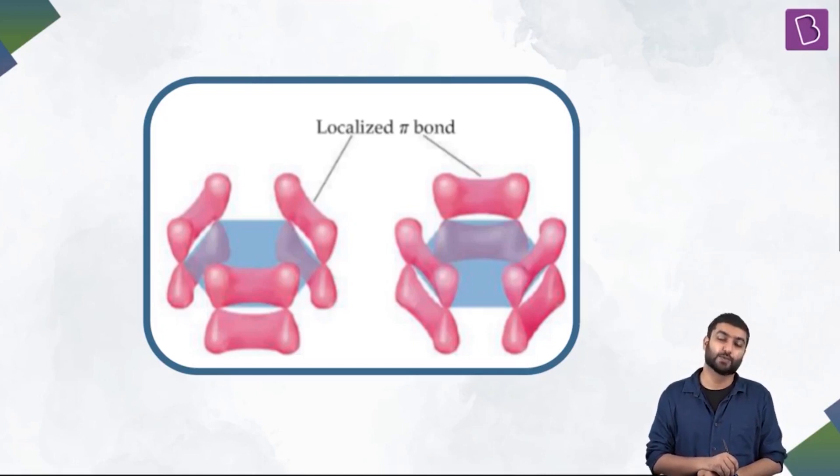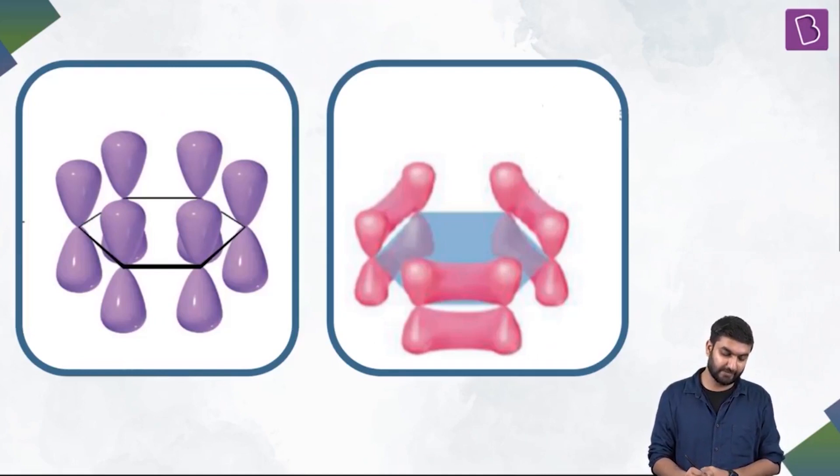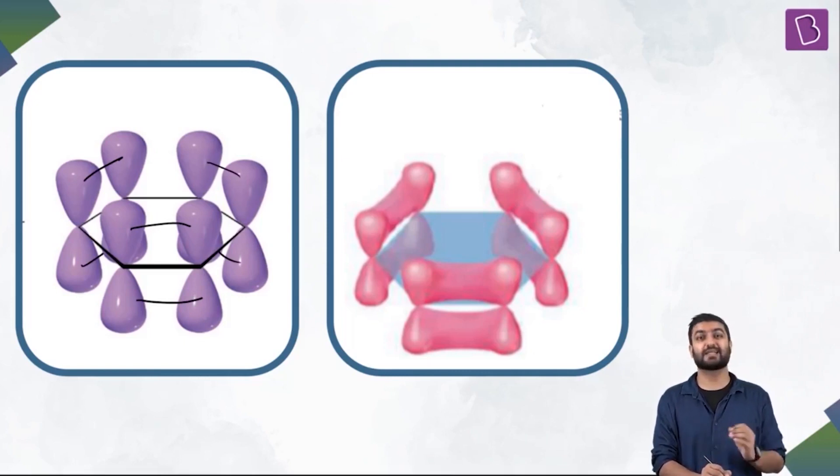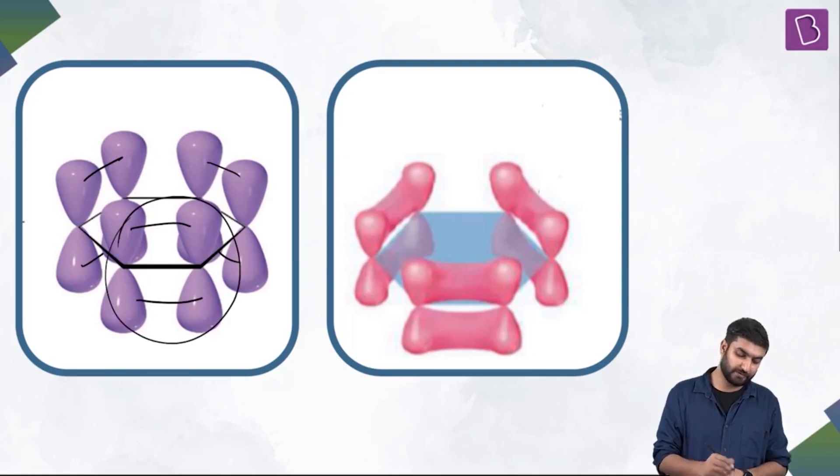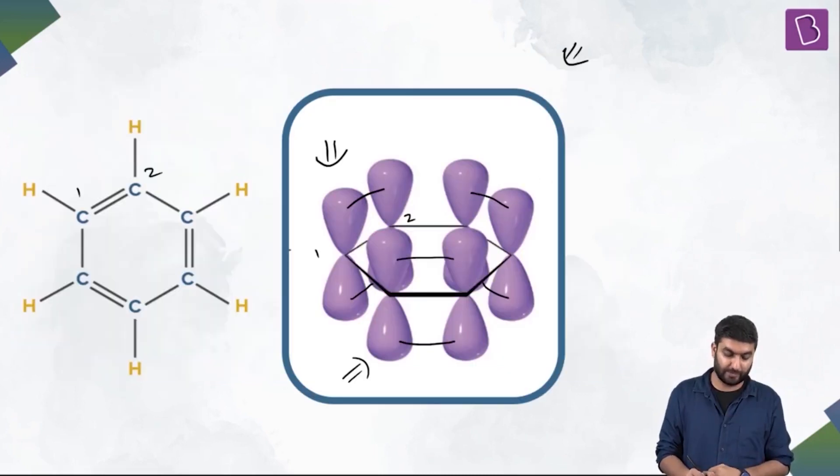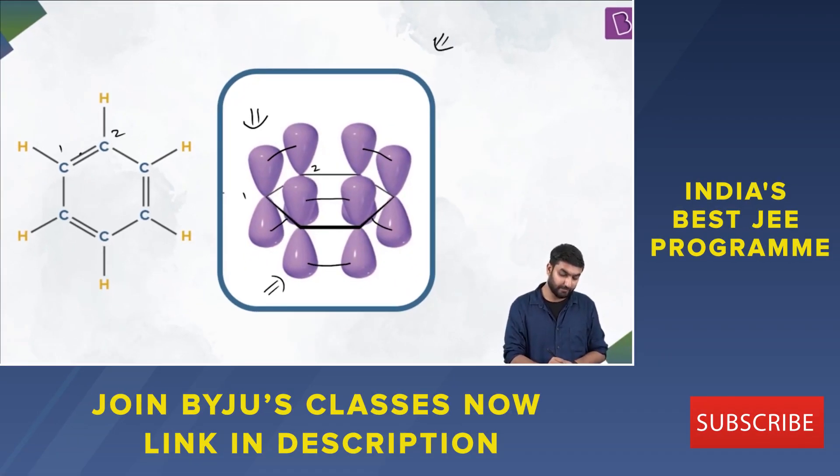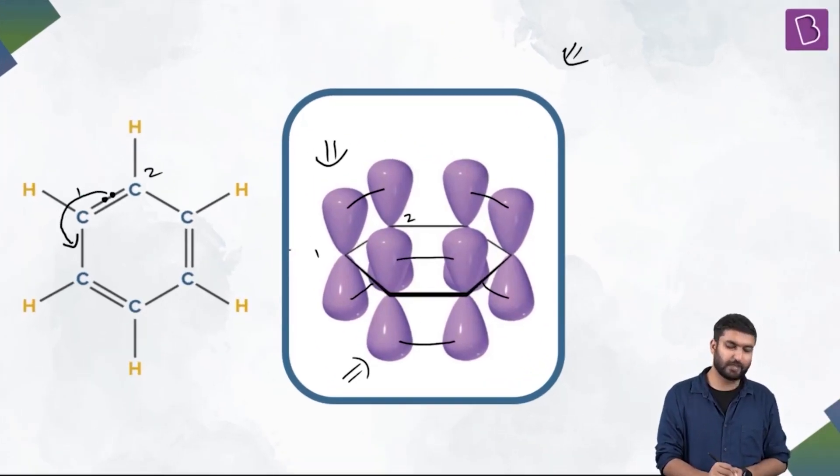But currently what you see here is these are localized pi bonds. So what happens is that if you imagine this stuff like this, let's say some bond is happening over here, some pi bond is happening over here, some pi bond is happening over here. These are localized pi bonds. And the electron pair jumps from between these two orbitals. I think it will be better to explain over here. So let's say the electron pair jumps from somewhere over here, and it basically asks this carbon, hey carbon, will you make a bond with me?